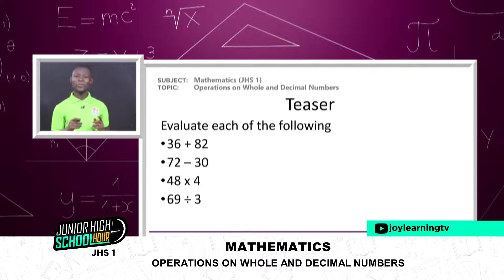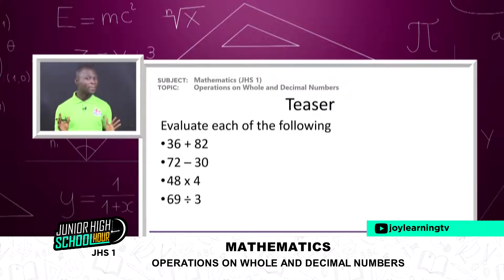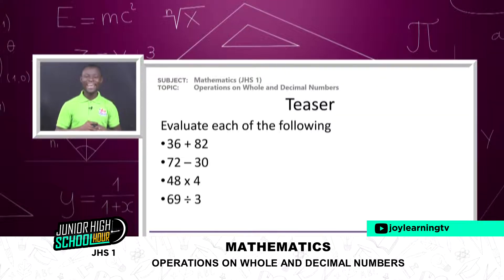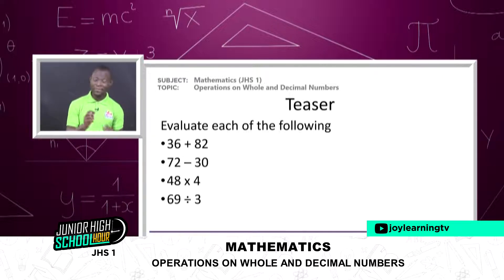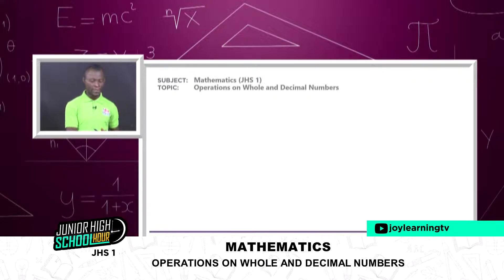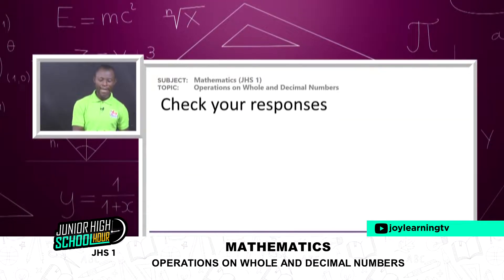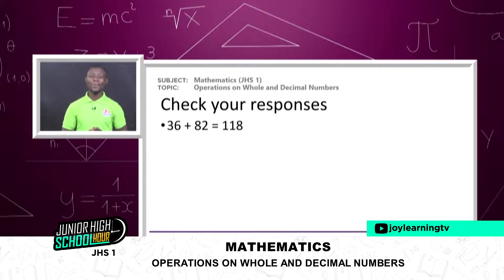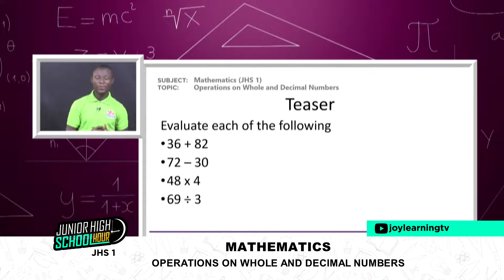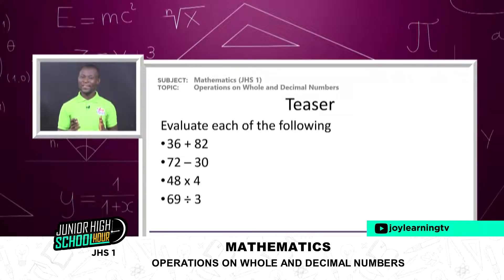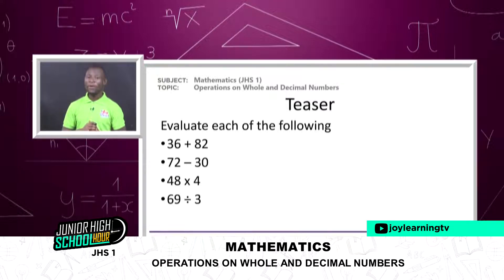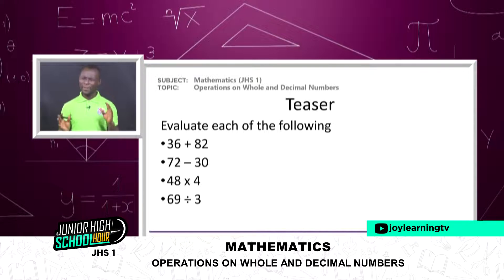Let's take a teaser — work these out in five seconds maximum. First: 36 plus 82. Second: 72 minus 30. Third: 48 times 4. And fourth: 69 divided by 3. Put your answers down in your jotter.